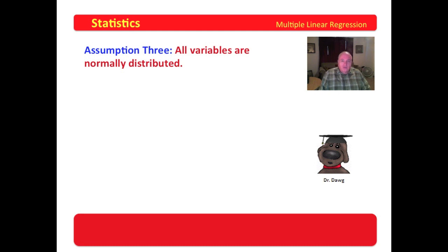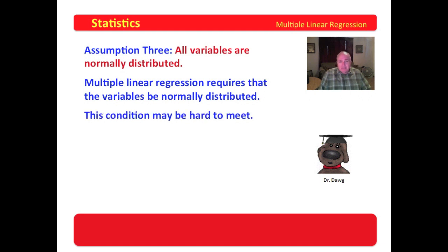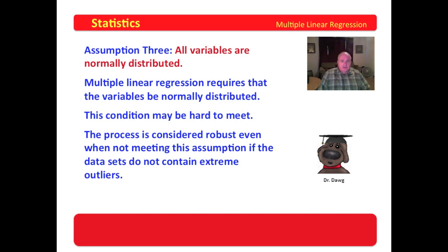The third assumption is that all variables are normally distributed. Normality is very important in multiple linear regression. The condition may be hard to meet, however, by the data sets that you extract and that you analyze. There are many researchers that say that the process is considered robust even if you don't meet this assumption. If the data sets do not contain extreme outliers, then the research that you've done may, in fact, be robust. And guys, this is kind of an approach when you have assumptions. If you have an assumption that is not met, then declare that it's not met. Then go out and find a researcher that says that the process is still robust. Let me tell you, it doesn't matter what you look for. There's a researcher out there somewhere that says it's going to be OK. Pretty interesting.